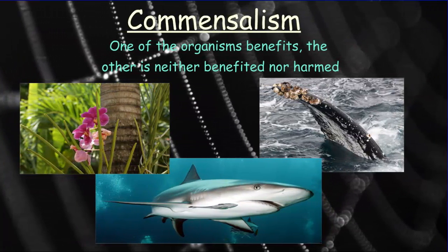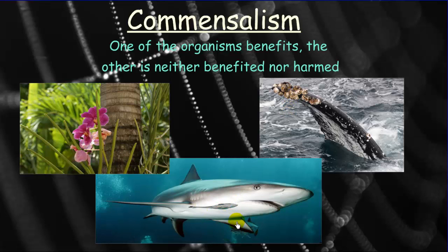The next relationship is commensalism, where one organism benefits and the other is neither benefited nor harmed. In the pictures shown, one organism is just living its life while the other lives closely in its space — sometimes even attached, as with the whale and shark, or the orchid. The attached organism receives all the benefit, whether protection from predators or access to food, while the other is unaffected.